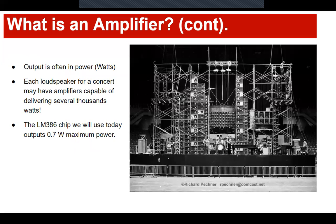Amplifier outputs are often rated in watts, which is their power output capacity. Power is voltage times current. Some loudspeaker amplifiers can do thousands of watts — modern concerts can exceed a million watts. The chip we're working with today can do about 750 milliwatts, roughly 0.7 of a watt, which is much lower but will still be pretty loud.